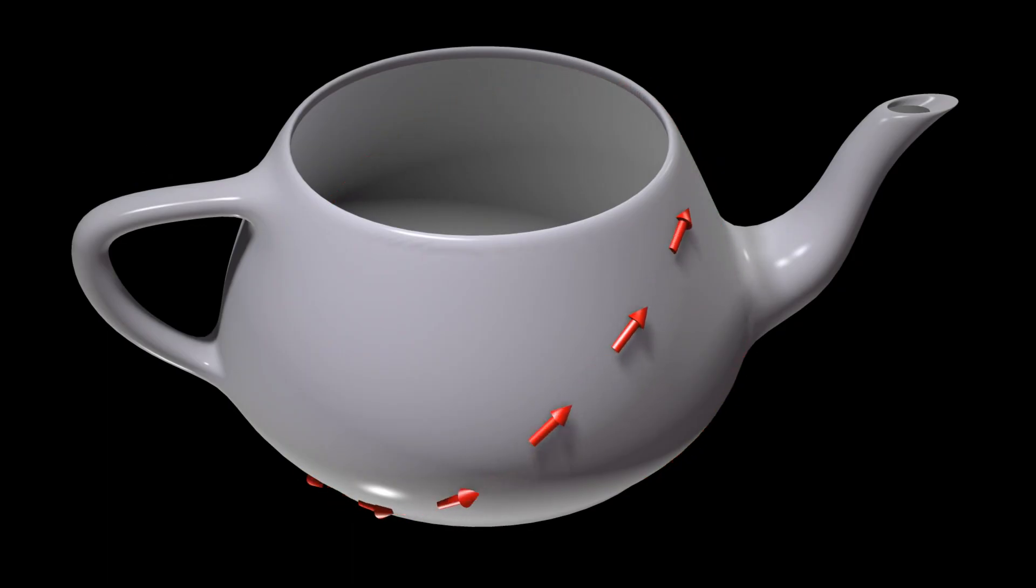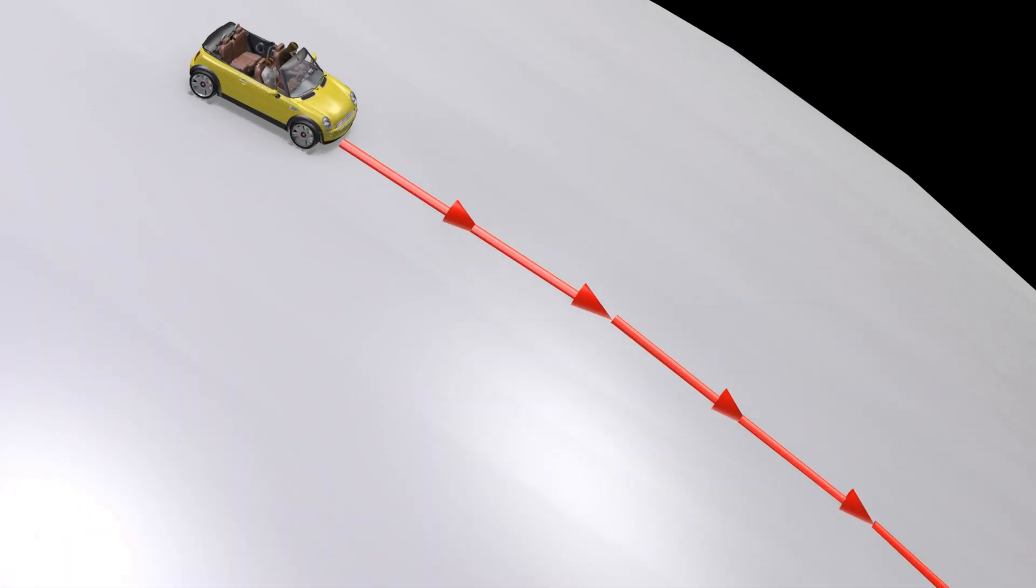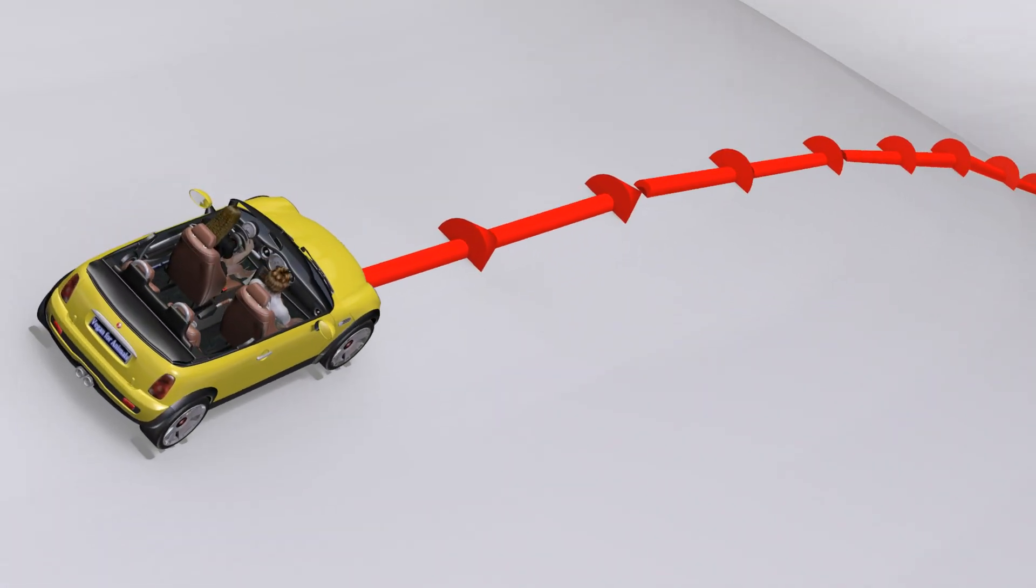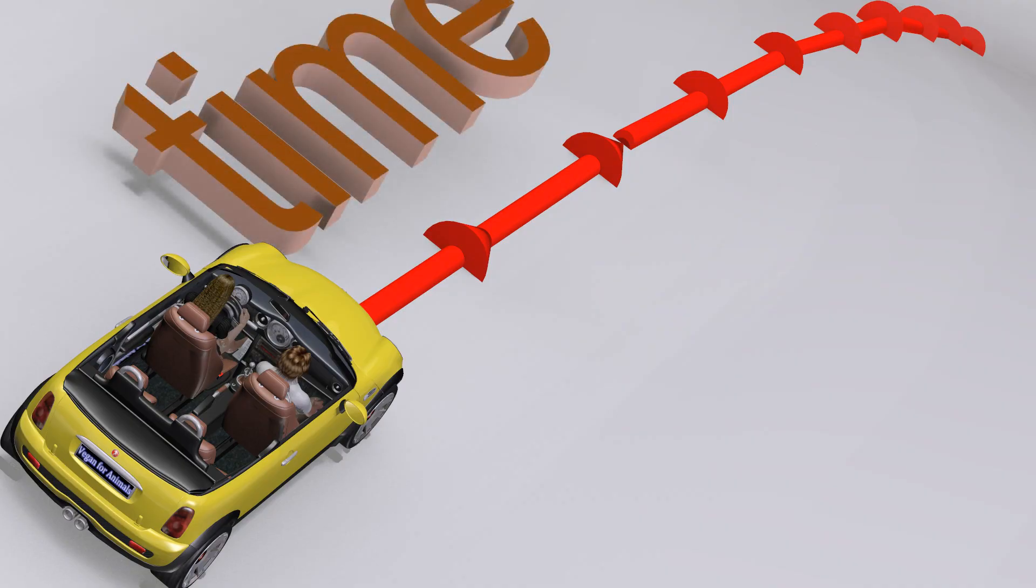In cases where we are traveling at a speed far less than the speed of light, and Newtonian physics gives us accurate approximations, contrary to popular belief, the apparent force of gravity has little to do with the curvature of the three spatial dimensions relative to each other.